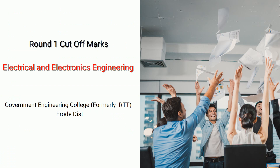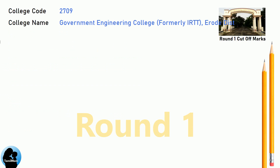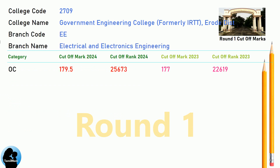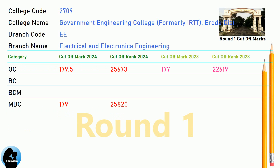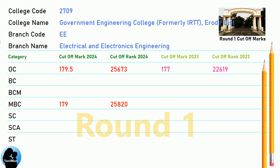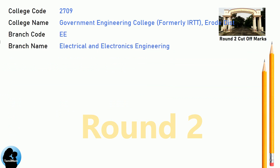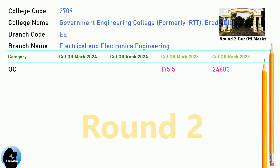DNA 7.5 Reservation Cut-Off for Government Engineering College, formerly IRTT, Erode District in Electrical and Electronics Engineering. DNA Round 2 Cut-Off for Government Engineering College, formerly IRTT, Erode District in Electrical and Electronics Engineering.